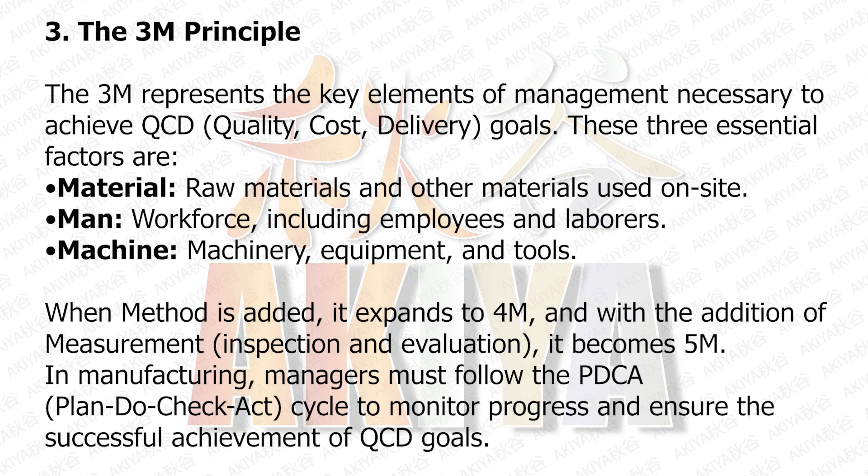The 3M principle represents the key elements of management necessary to achieve QCD goals. These three essential factors are: Material — raw materials and other materials used on site; Man — workforce including employees and laborers; Machine — machinery, equipment, and tools. When Method is added, it expands to 4M, and with the addition of Measurement (inspection and evaluation), it becomes 5M. In manufacturing, managers must follow the PDCA (Plan, Do, Check, Act) cycle to monitor progress and ensure the successful achievement of QCD goals.